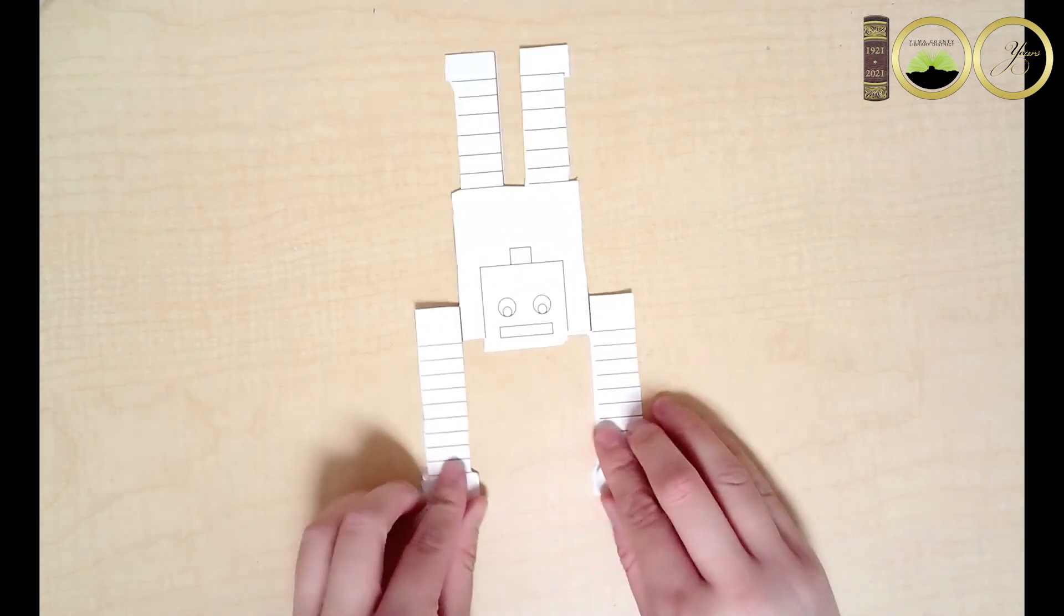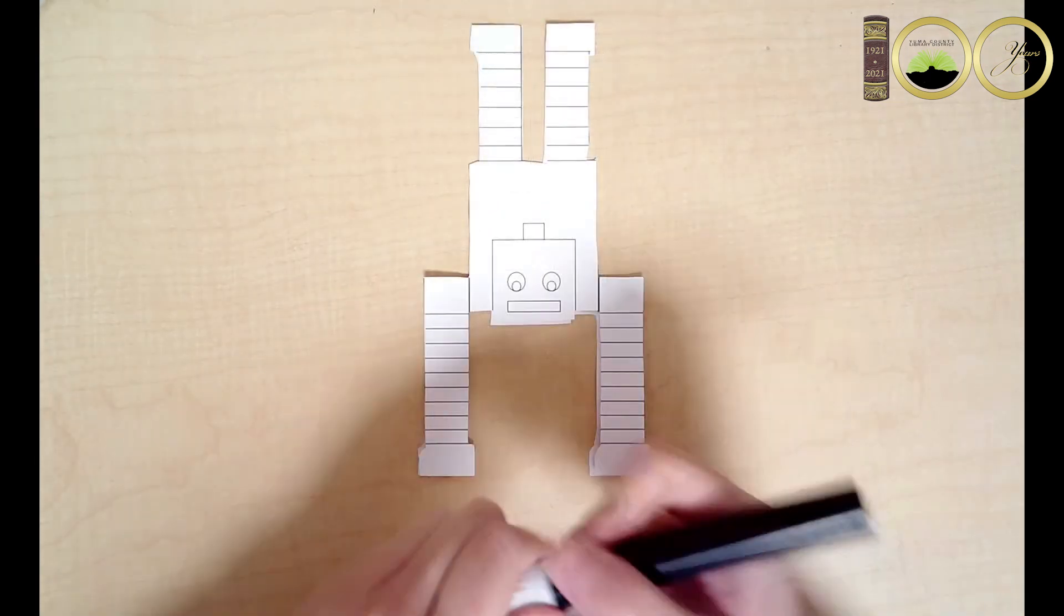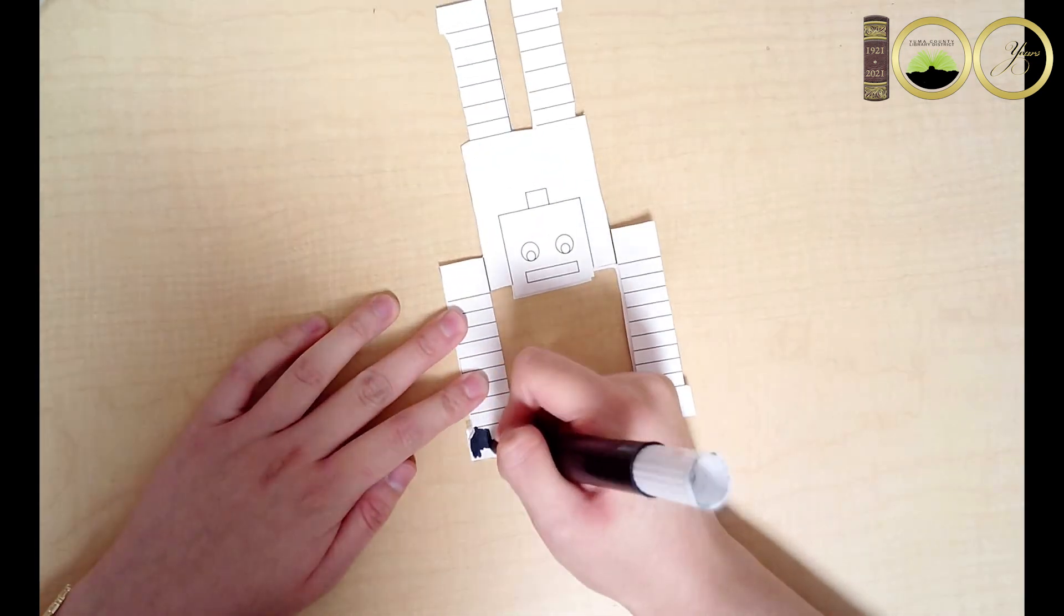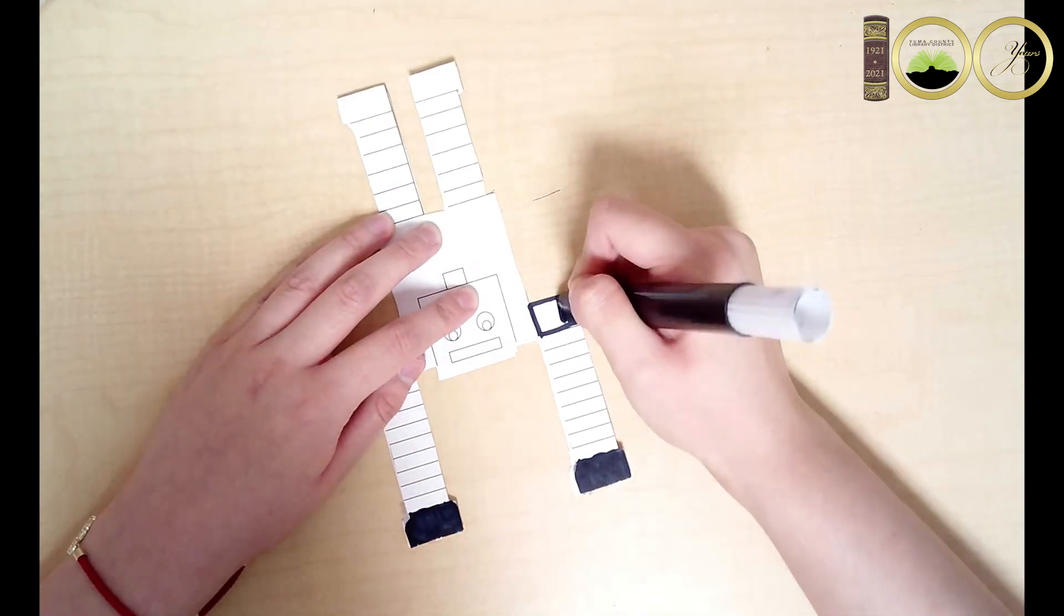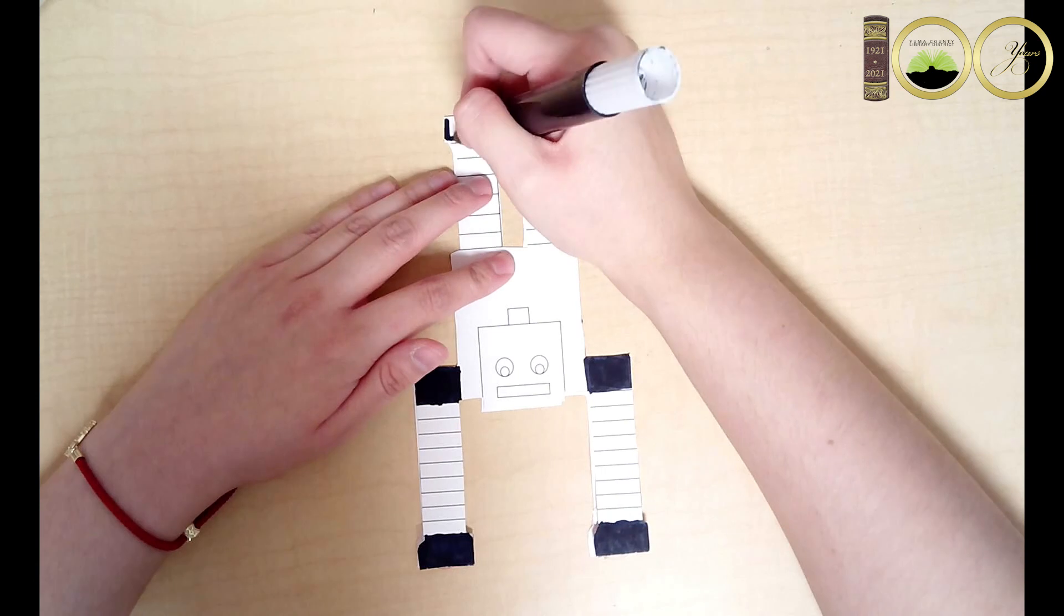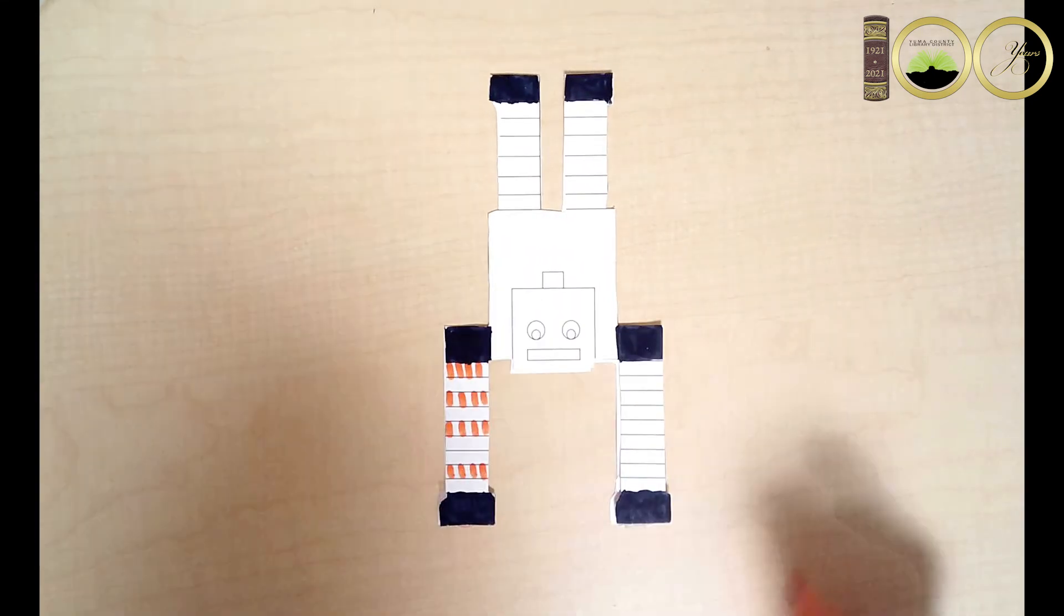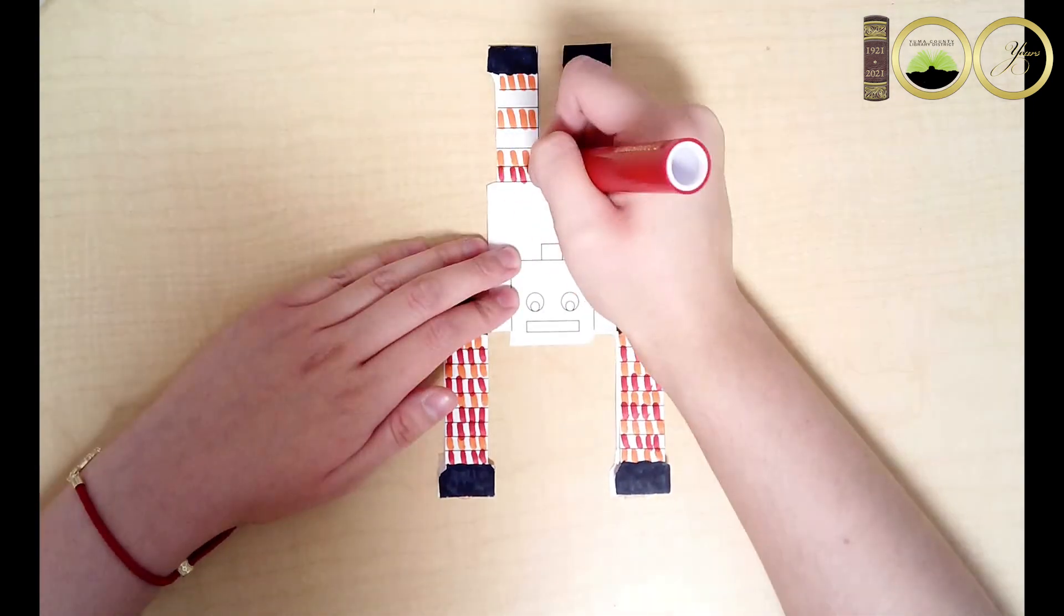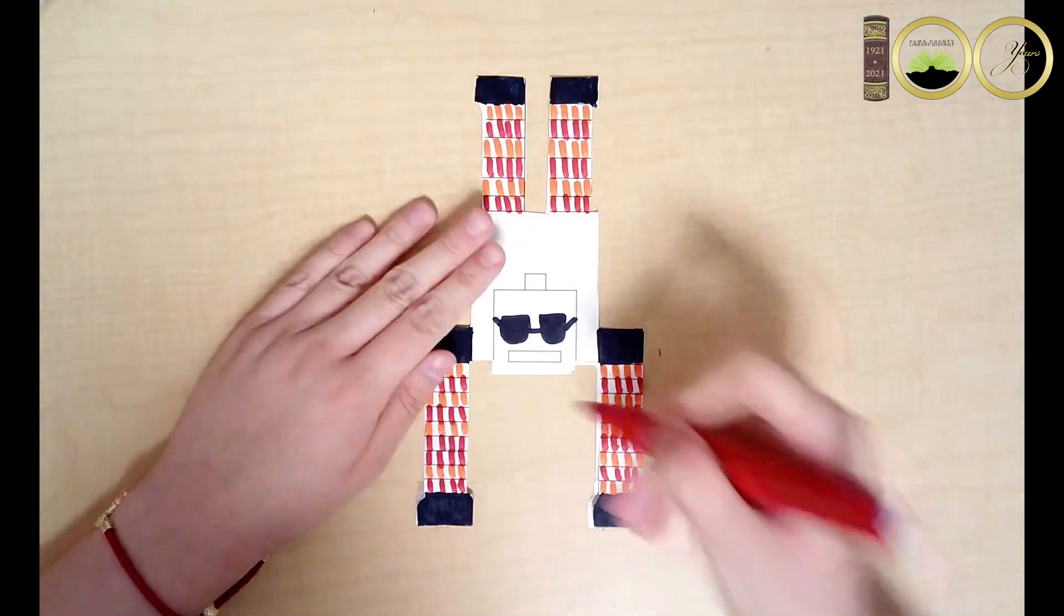Now, you've got your balancing robot. If you want to give it some flair, you can use markers, crayons, or colored pencils to color it however you'd like. I'll be giving mine some very electric Hot Wheels style colors, which is perfect for the summer. Make sure to color the other side too.